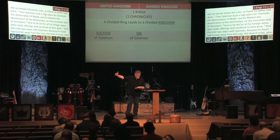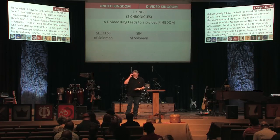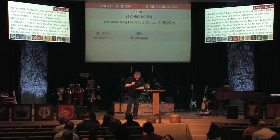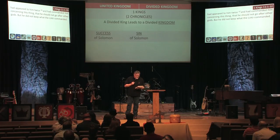Solomon built high places for Chemosh, the abomination of Moab, and for Molech, the abomination of the Ammonites — these are false gods — on the mountain east of Jerusalem. He did this for all his foreign wives who made offerings and sacrifice to their gods. In verse 9, the Lord was angry with Solomon because his heart had turned away from the Lord, the God of Israel, who had appeared to him twice and commanded him not to go after other gods — but he did not keep what the Lord commanded.